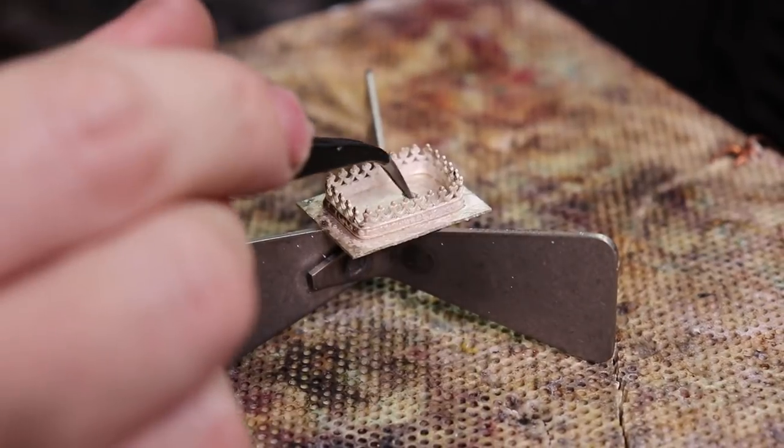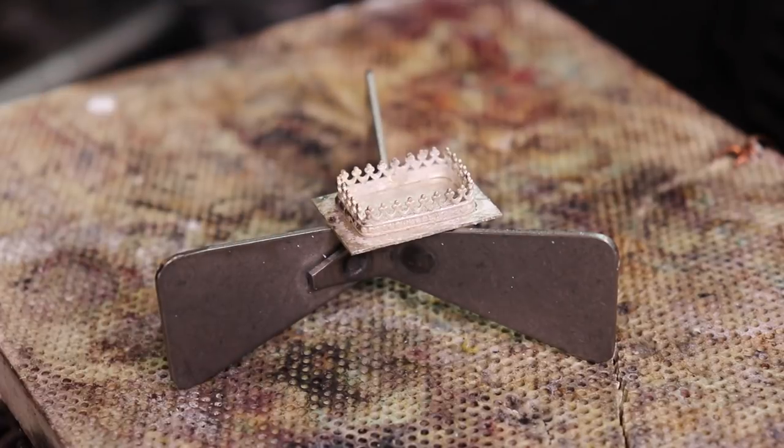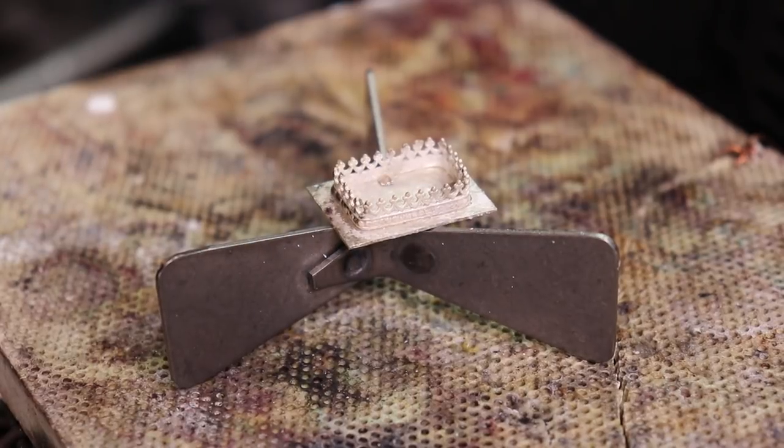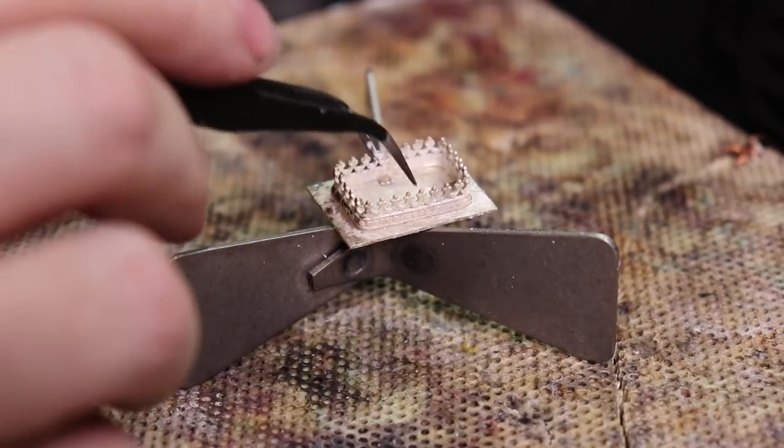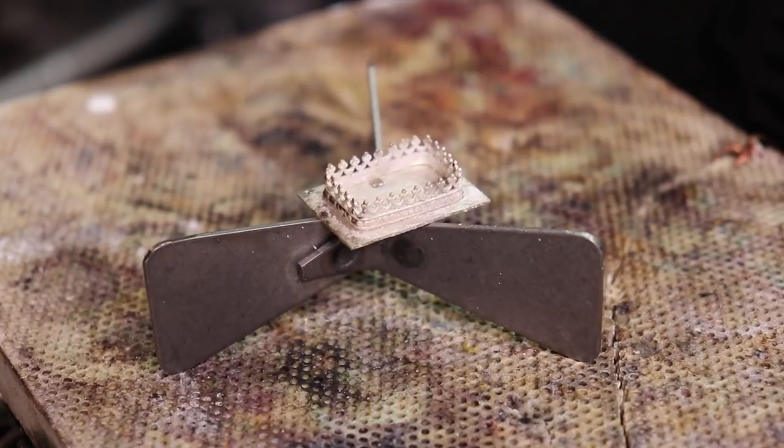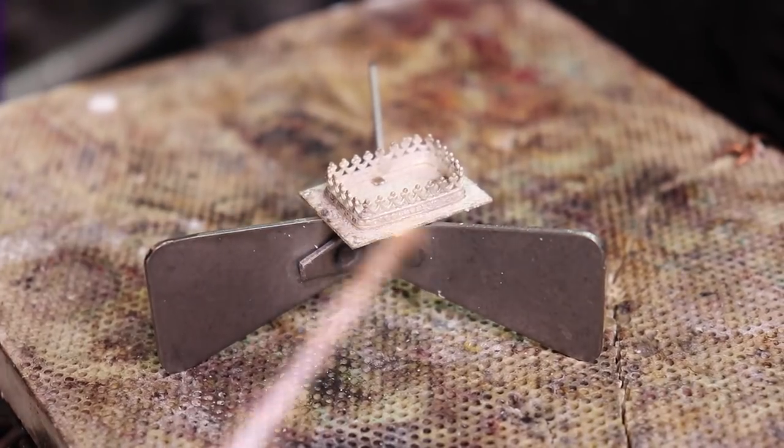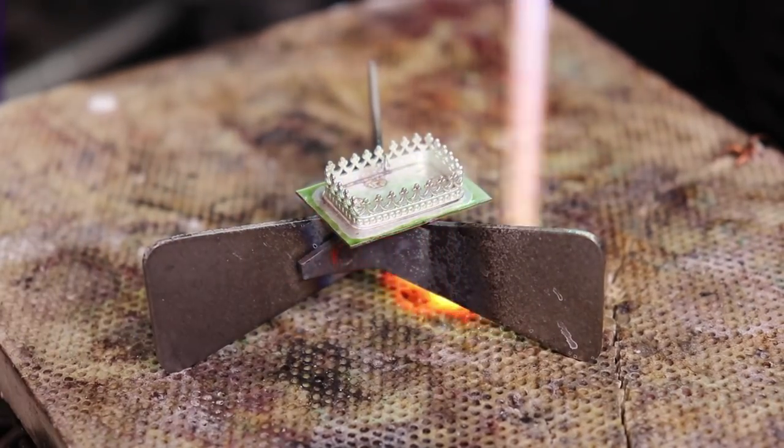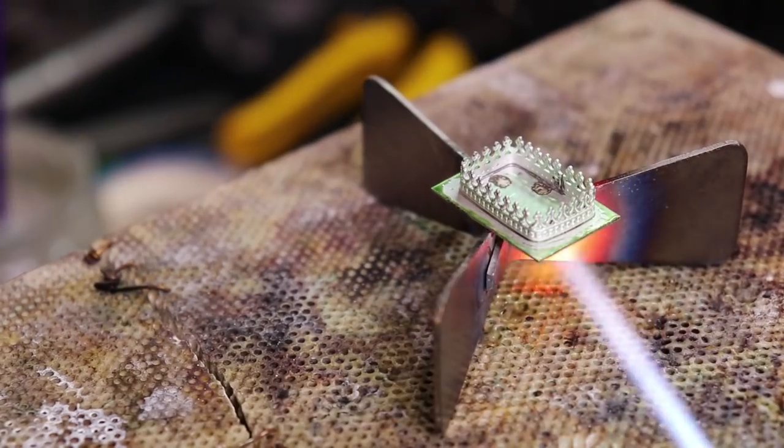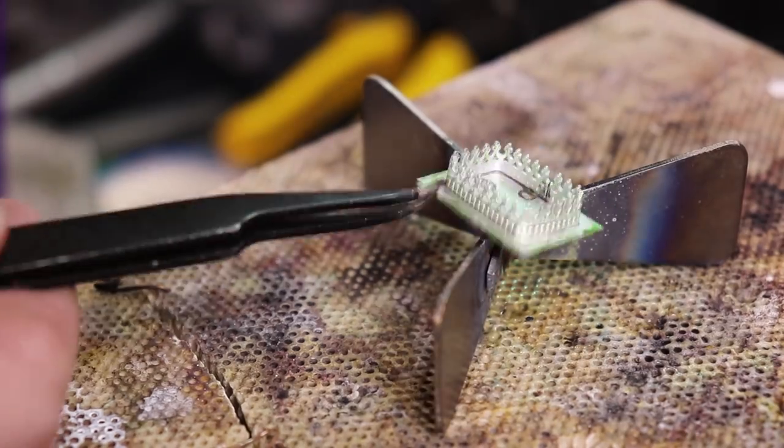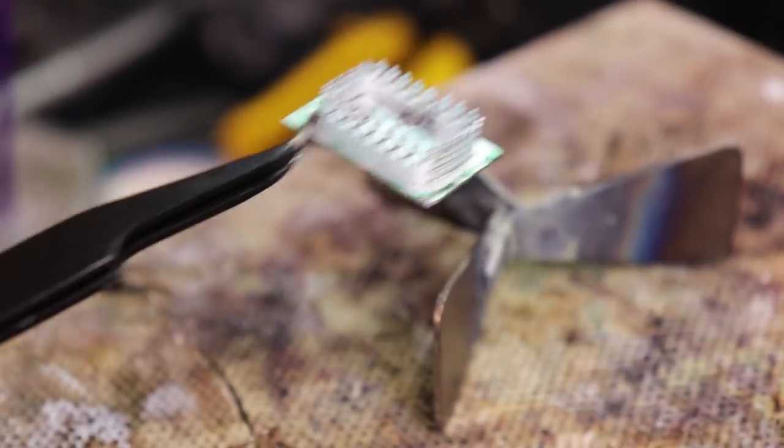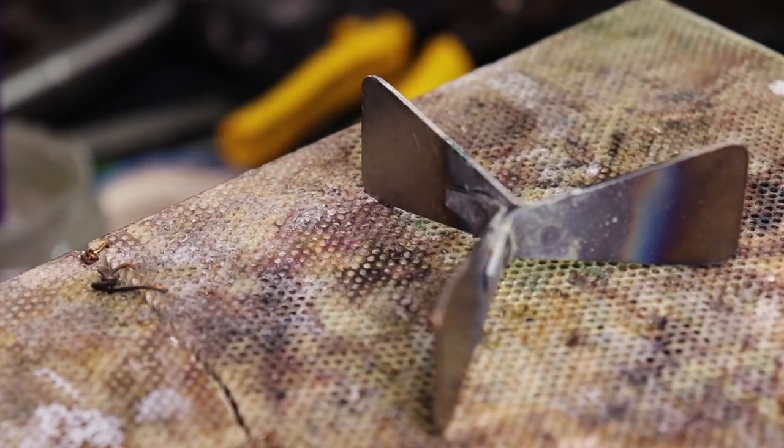For my back plate, I'm going to flux the entire thing and then move it over to my heating area. After fluxing the gallery wire, I place it into the center of this back plate and add four pieces of medium silver solder to each side of the rectangle to make sure that my solder will flow all the way around. When soldering things like this, make sure that you're always moving your torch around because you can melt your piece very easily.